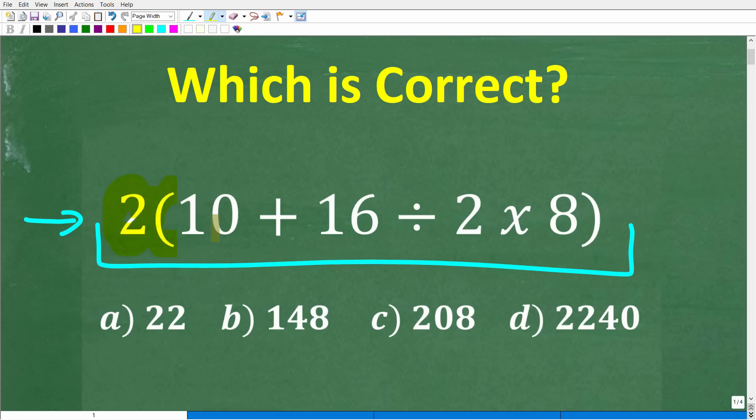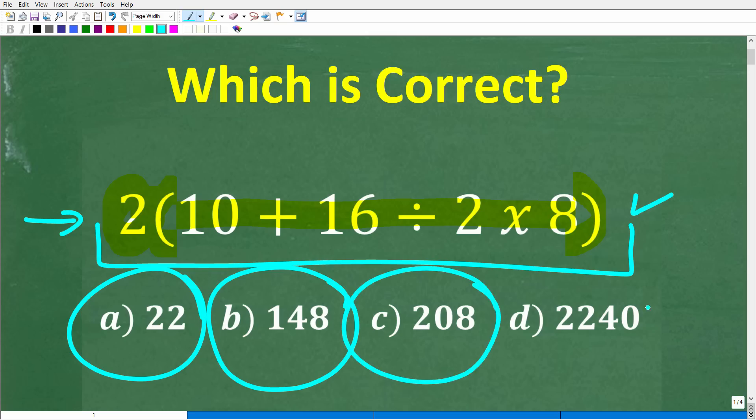We have 2 times parentheses 10 plus 16 divided by 2 times 8 and parentheses. Now this is a multiple choice question. So A is 22, B is 148, C is 208, and D is 2240.